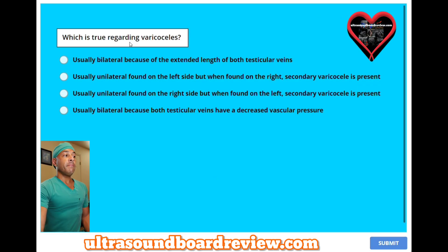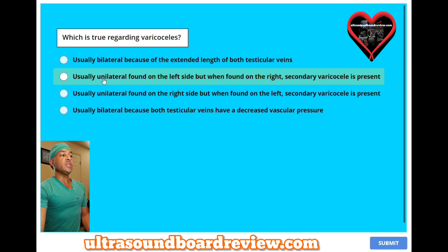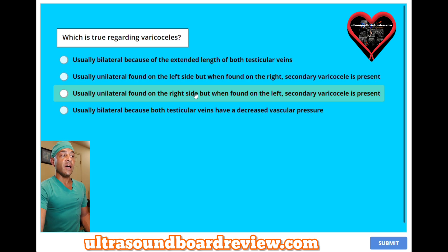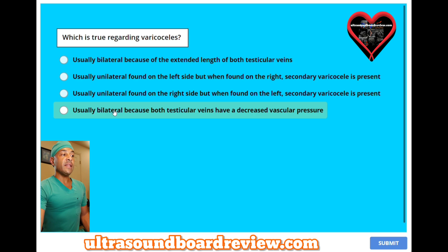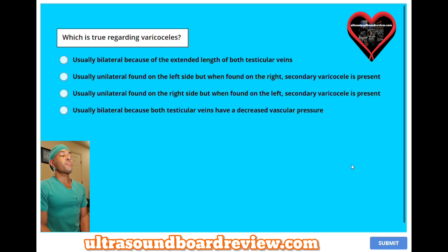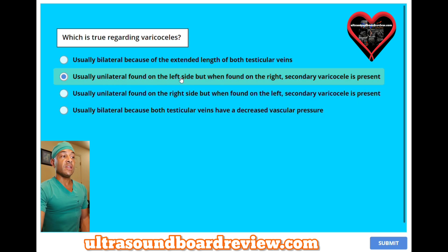Which is true regarding varicoceles? A, usually bilateral because of the extended length of both testicular veins. B, usually unilateral found on the left side, but when found on the right, secondary varicocele is present. C, usually unilateral found on the right side, but when found on the left, secondary varicocele is present. Or D, usually bilateral because both testicular veins have decreased vascular pressure? The answer is B, usually unilateral found on the left side, but when found on the right, secondary varicocele is present.